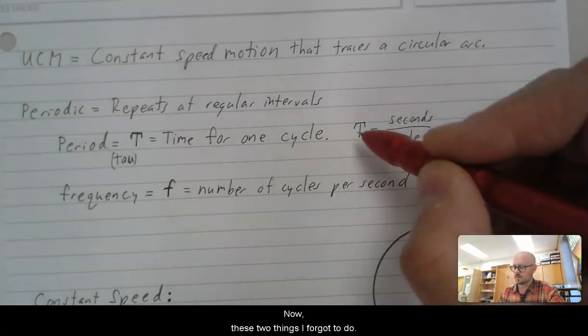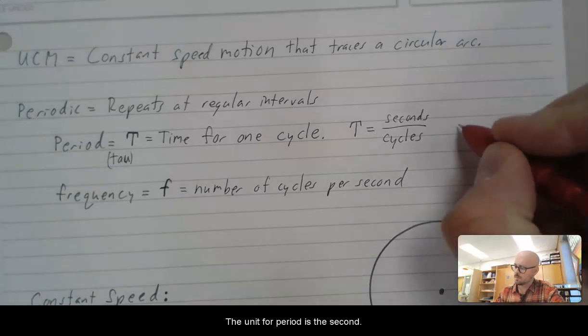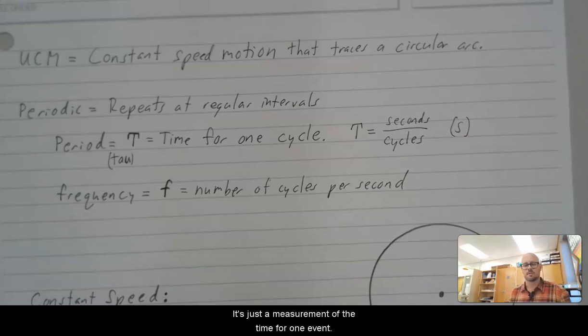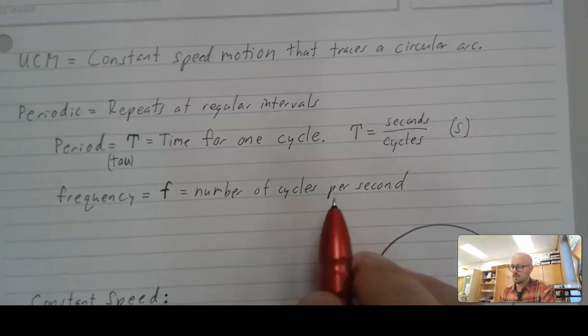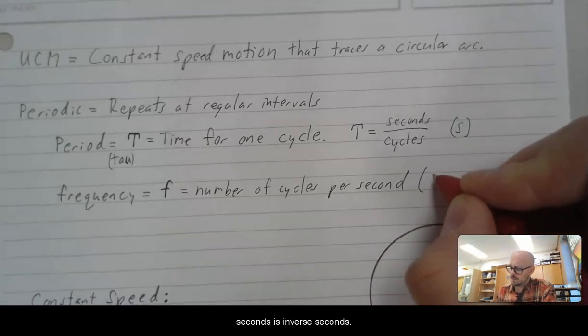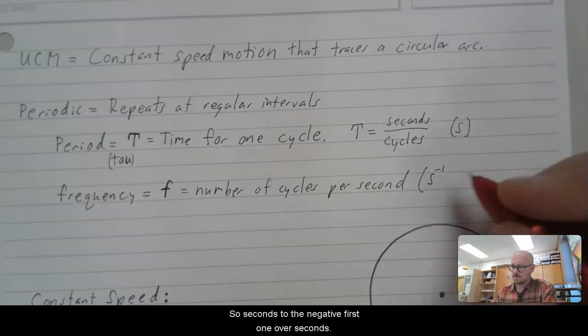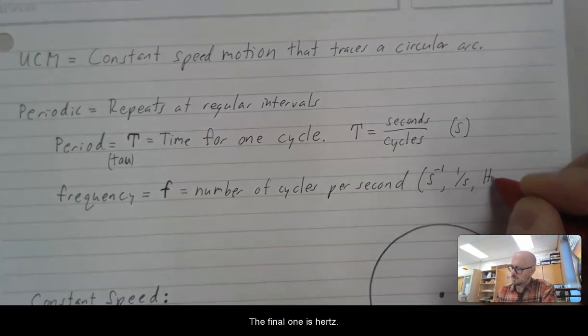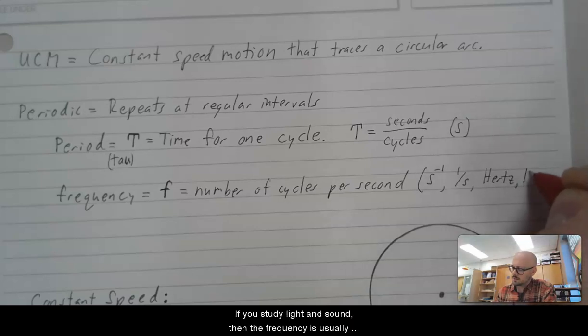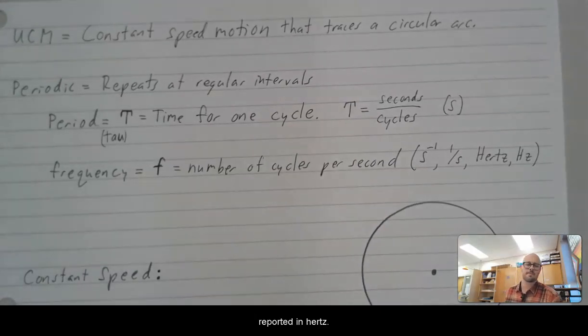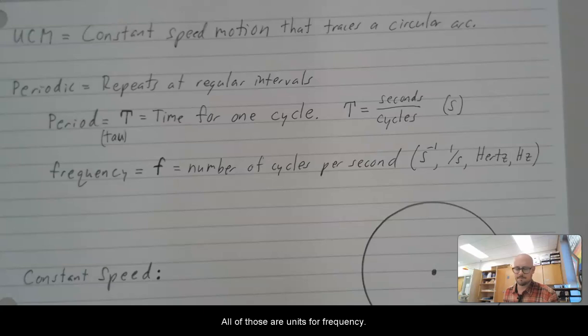Now, these two things, I forgot to do the units for period. The unit for period is the second. That's pretty easy. It's a measurement of time. It's just a measurement of the time for one event. Frequency is the reciprocal. And so the reciprocal of seconds is inverse seconds. So seconds to the negative first, one over seconds. Those are possible units for frequency. The final one is hertz. If you study light and sound, then the frequency is usually reported in hertz. All of those are units for frequency.